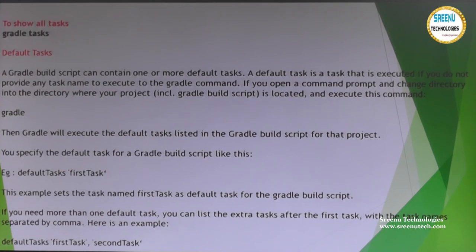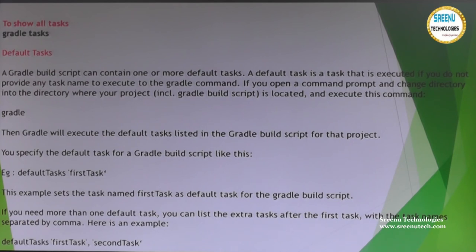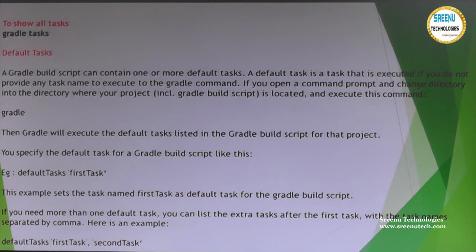When you run the gradle command without a task name, Gradle will search for a configured default task in the build. If one is configured, it will execute automatically. To define a default task, use: defaultTasks 'taskName'. For multiple default tasks, separate them with commas: defaultTasks 'taskName1', 'taskName2'. They execute in the order configured.